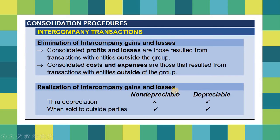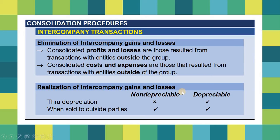Any sales transactions made within the group are not yet realized — what is realized are those outside of the group. At the time of sale, all intercompany gains and losses are eliminated because they are still unrealized. When do we realize these intercompany gains and losses? It depends on the type of asset sold. For non-depreciable assets, we only have one way to realize them: when sold to outside parties. Since inventory is a non-depreciable asset, the realization of intercompany gains and losses occurs through sale to outside parties.